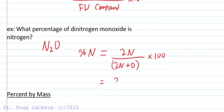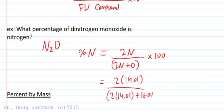When we plug this in from the periodic table, we get 14.01 for the mass of nitrogen and 16.00 to four significant figures for the mass of oxygen times 100. We can multiply this out and we get to four significant figures 63.65% atomic nitrogen.